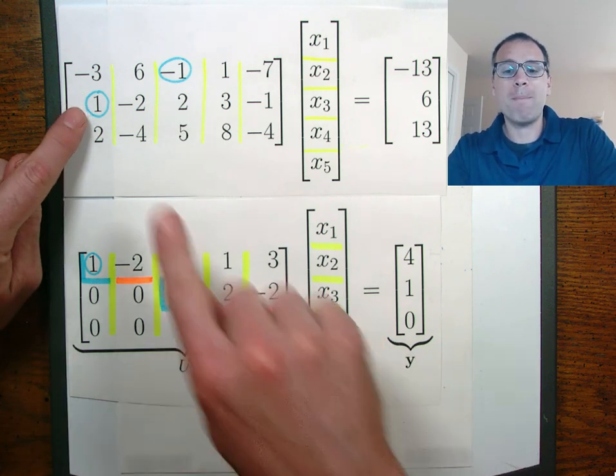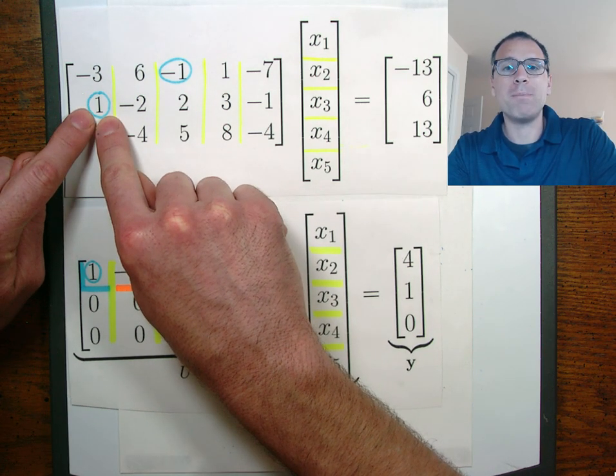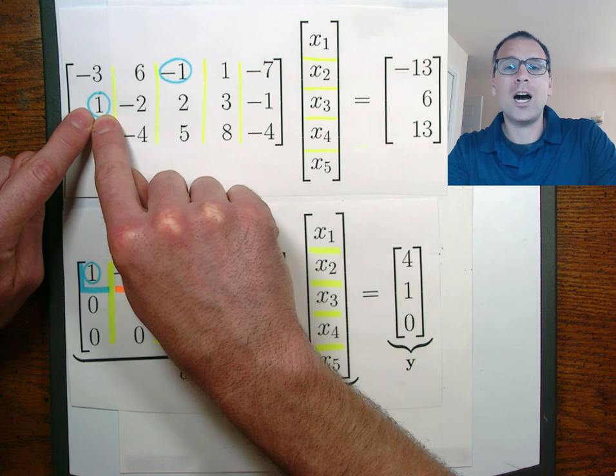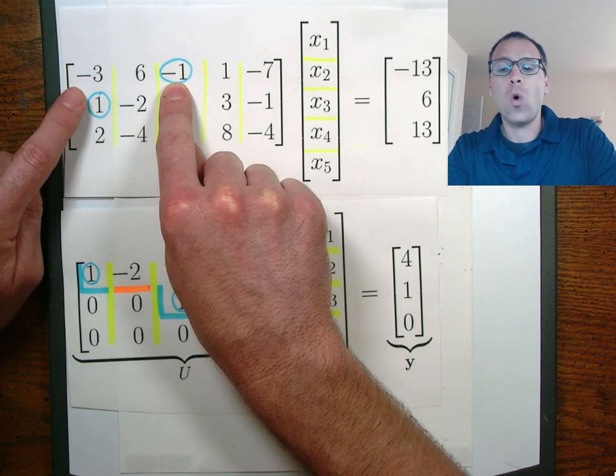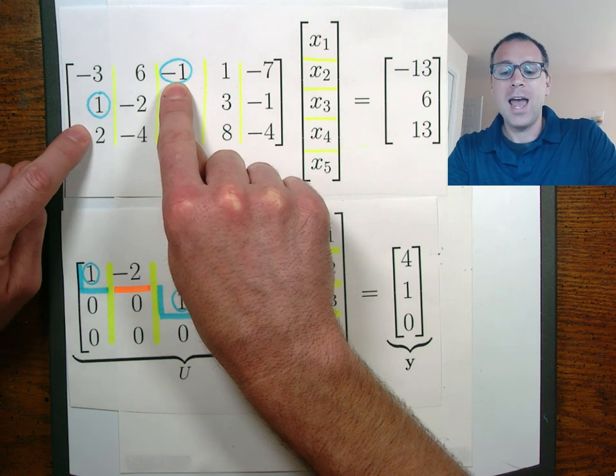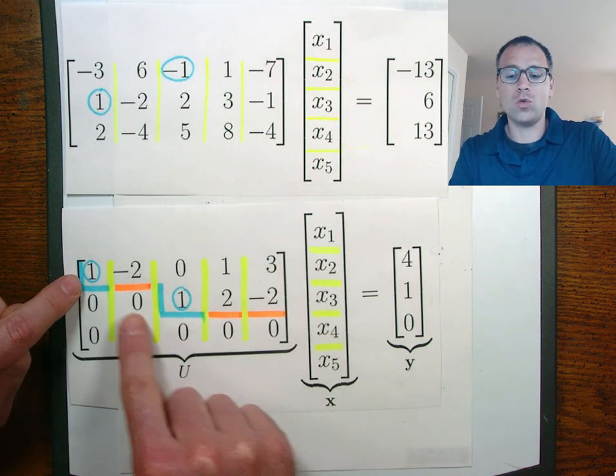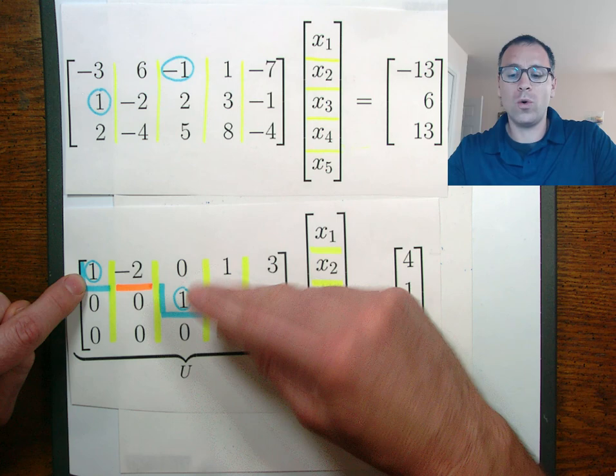In this case we saw that pivot element 1 was in pivot position 2 comma 1. Pivot element 2 was in pivot position 1 comma 3 and those mapped down onto rows 1 and 2 with a permutation.